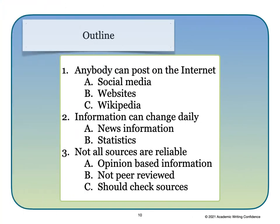Now we can work on our outline for the rest of the essay to help us write our body paragraphs. Our first point is that anybody can post on the internet — for this paragraph, we could write about social media, websites, and Wikipedia. Our second body paragraph is about how information can change daily; here we might include sentences about news information and statistics. And finally, our third body paragraph is about how not all sources are reliable — here we could talk about opinion-based information, the fact that many articles are not peer reviewed, and that people should check their sources.